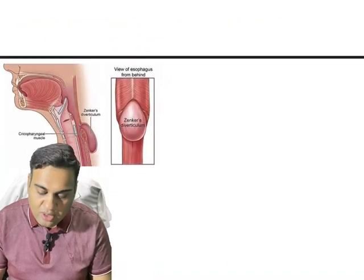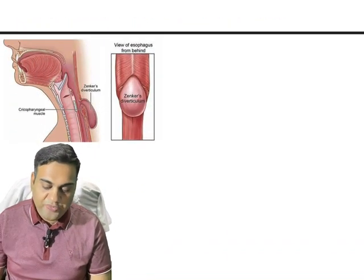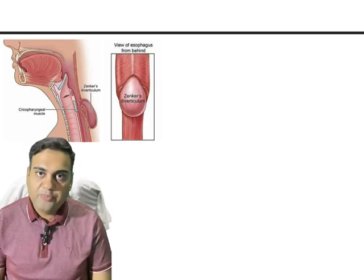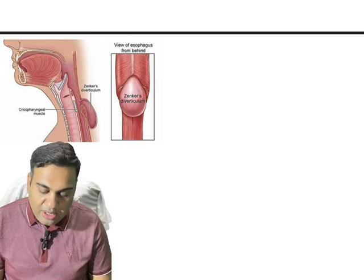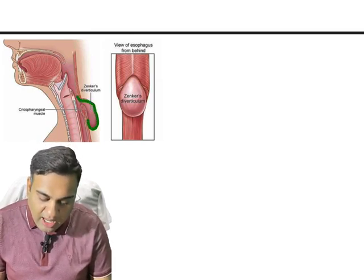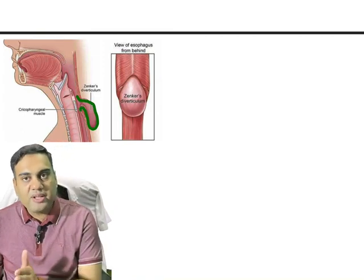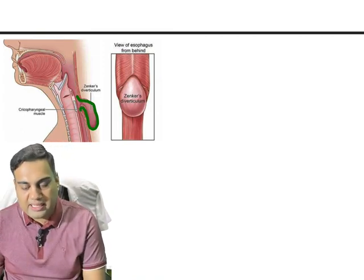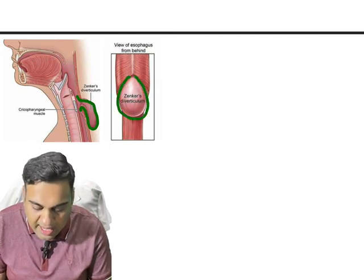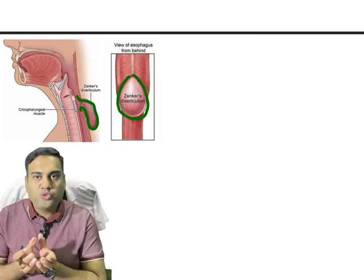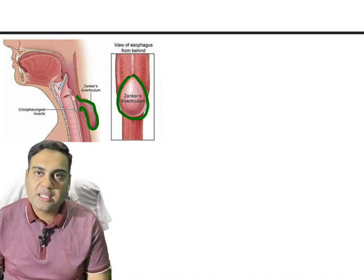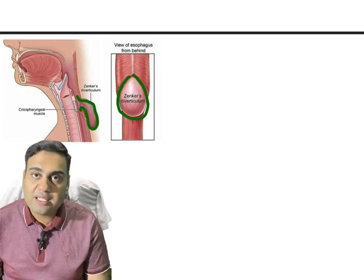Let's look at this diagram from the lateral and posterior aspects. The pharyngeal mucosa shows an outpouching into the retropharyngeal space. When we look at it from behind, we see the outpouching — discovered by Zenker — and it is called Zenker's diverticulum.